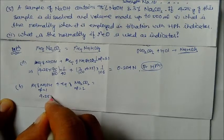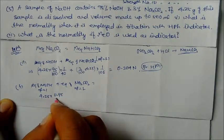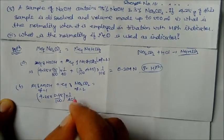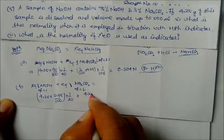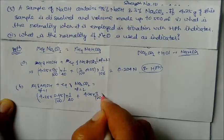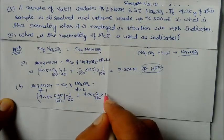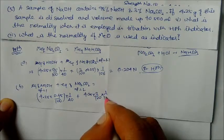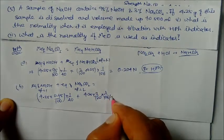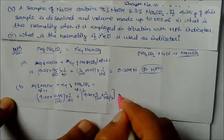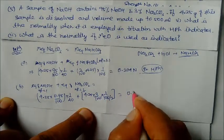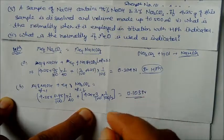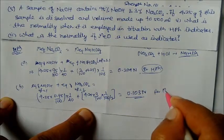For NaOH: 4.25 × 0.95/100 × (1/40), because n-factor is 1. For Na₂CO₃: 4.25 × (3/100) × (2/106), because n-factor is 2 and equivalent weight is 106/2. Solving this gives 0.103 N. This is the normality for methyl orange indicator.